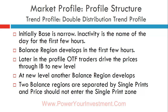The double distribution profile forms two balance areas: one where initial rotation happened within the initial balance, and a second new balance area that forms after the initial balance gets disturbed. The two balance regions are typically separated by single prints. These single prints are extremely important — usually price does not come back to visit them. If it does, something has changed in the market and you need to review your trades or opinion.